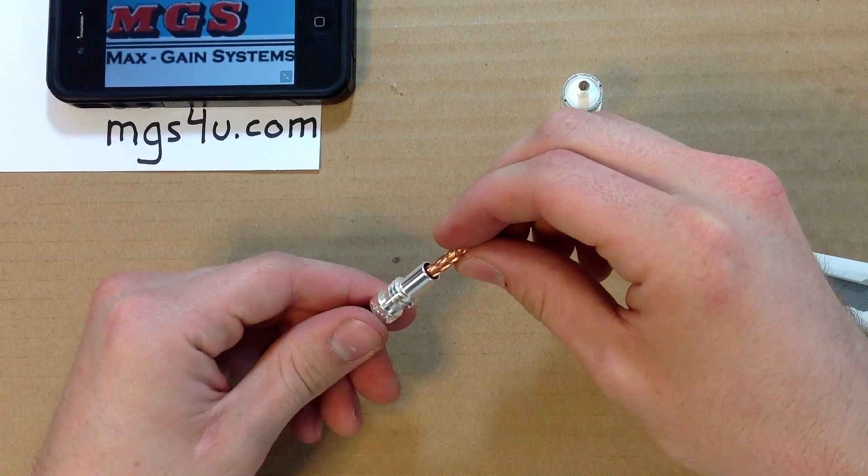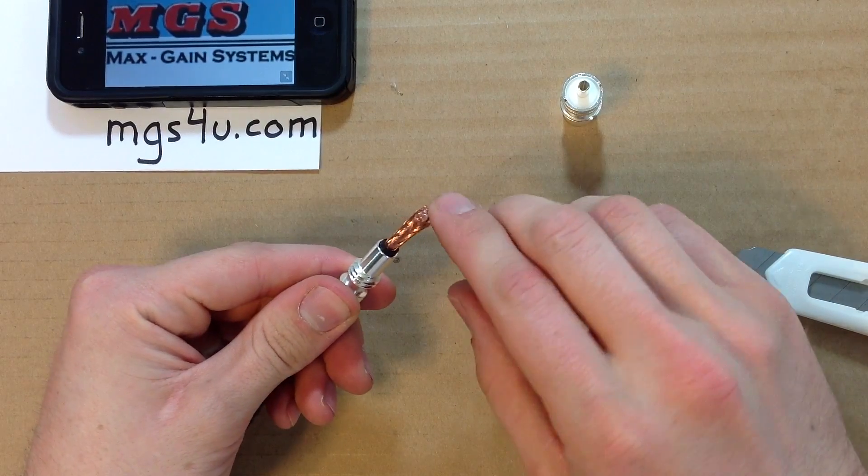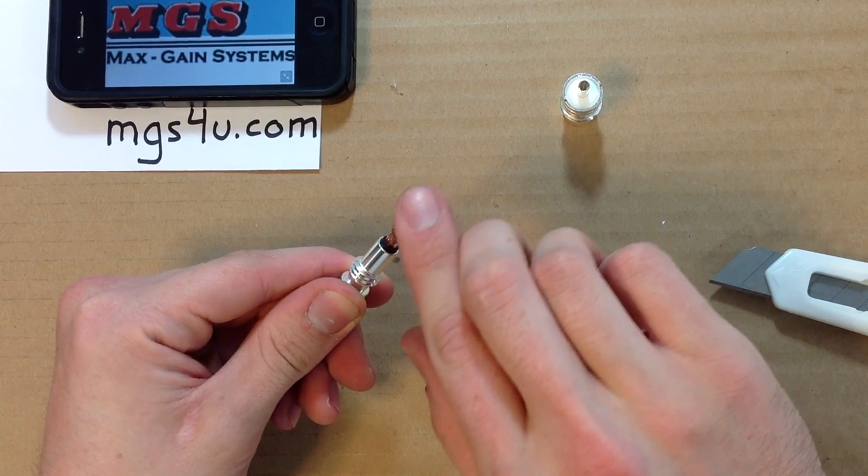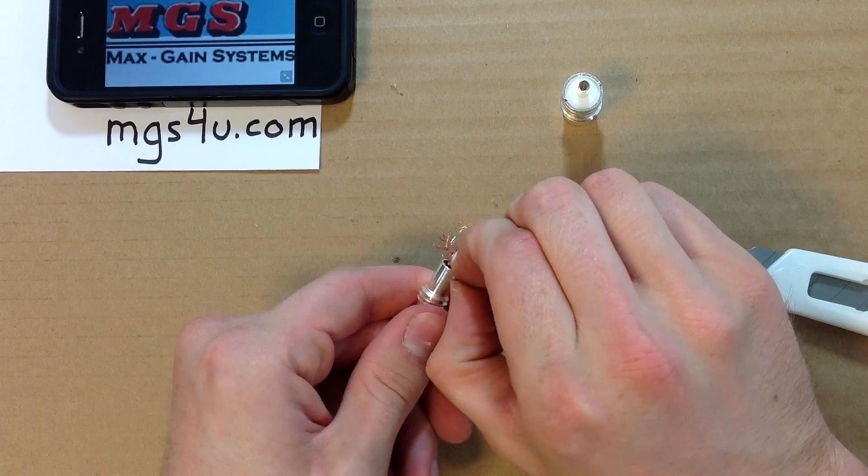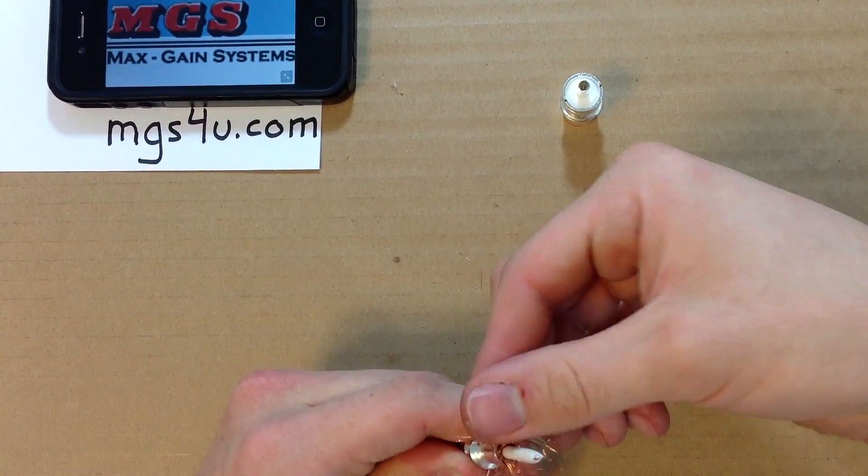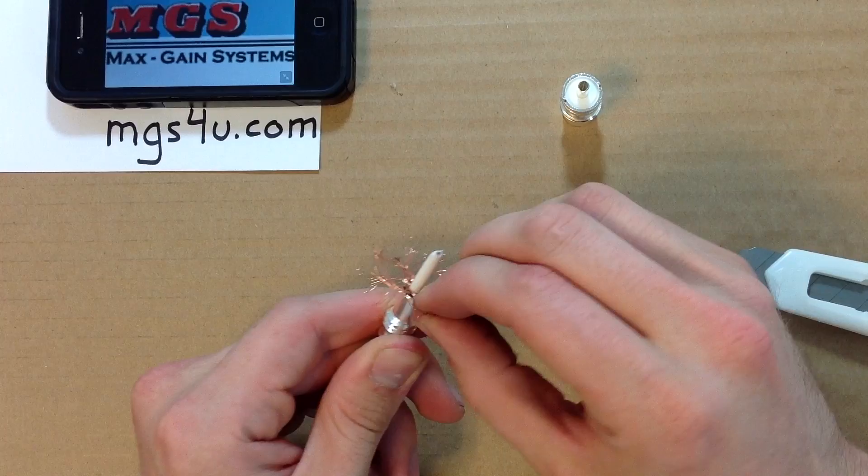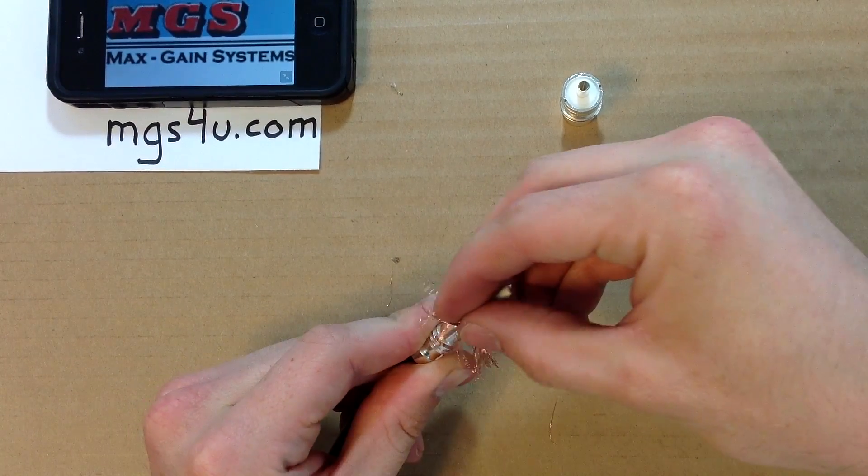Place the reducer on the cable and slide it up to the bottom where you cut the jacket. Begin separating the braid into their individual strands. The better you do at this step, the less opportunity for a short later on.